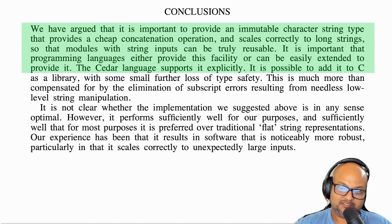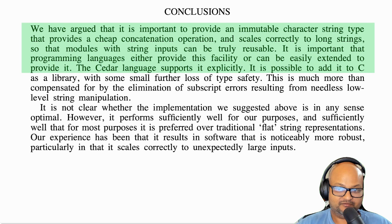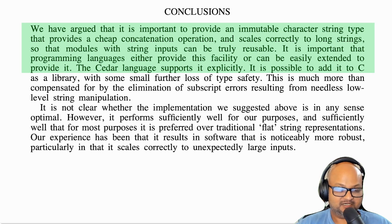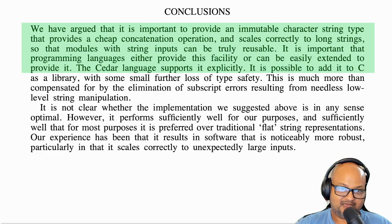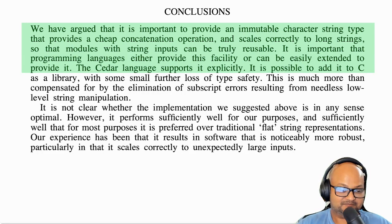So that was a quick look at the concept of ropes — a new data structure for representing strings that makes it much easier to represent immutable strings, enables cheap concatenation, and scales well to long strings. I hope you enjoyed that, and I will see you next time. Thank you very much.